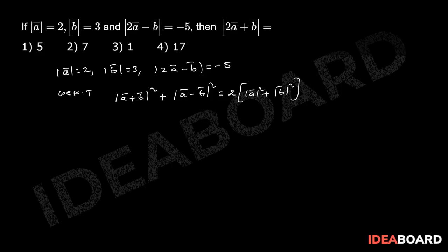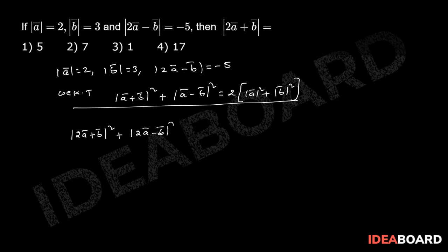Here we are using this result. Now modulus of 2a bar plus b bar whole square plus modulus of 2a bar minus b bar whole square equals 2 into 2 into modulus of a bar whole square plus modulus of b bar square, that equal to 2 into 4 into modulus of a bar square plus modulus of b bar square.